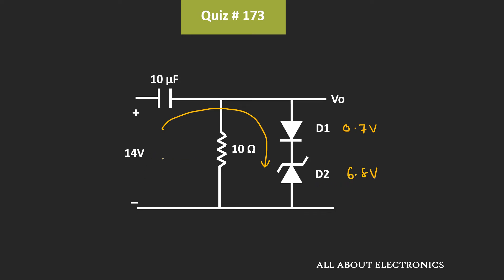During the positive half cycle, the voltage drop across the capacitor will be equal to 14V minus Vout. And during the positive half cycle, Vout will be equal to 0.7 plus 6.8V, that is equal to 7.5V. So the capacitor voltage Vc will be equal to 14V minus 7.5V. That means during the positive half cycle, the capacitor will charge to 6.5V, and the output voltage Vout will be equal to 7.5V.